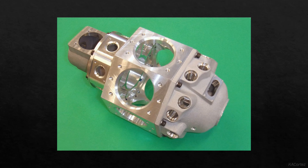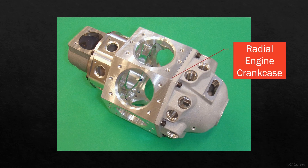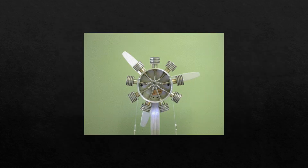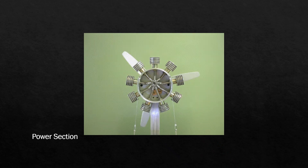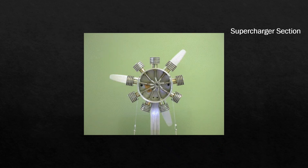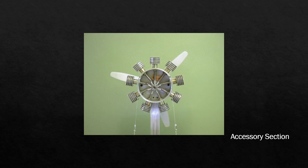Aside from the engine crankcase shown earlier, here is a picture of a radial engine crankcase. It is divided into four distinct sections. The number of sections can be as few as three or as many as seven, depending on the size and type of the engine. In general, a typical radial engine crankcase is separated into four main sections: the nose section, the power section, the supercharger section, and the accessory section.